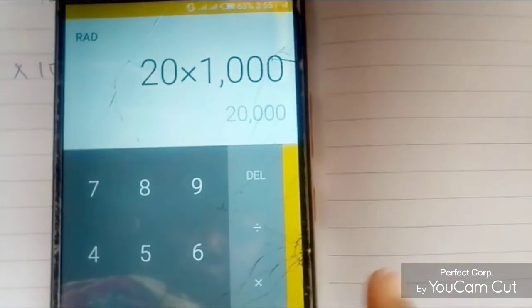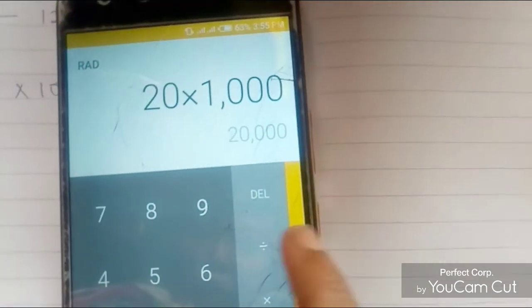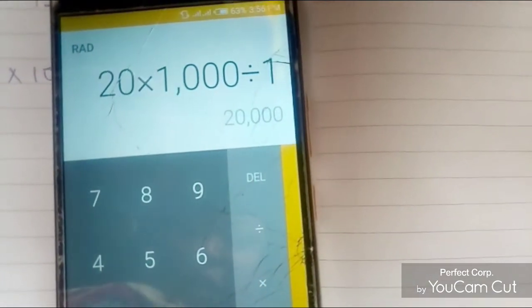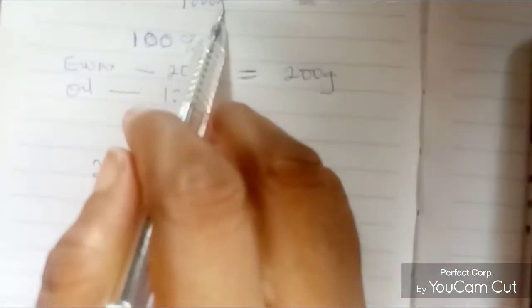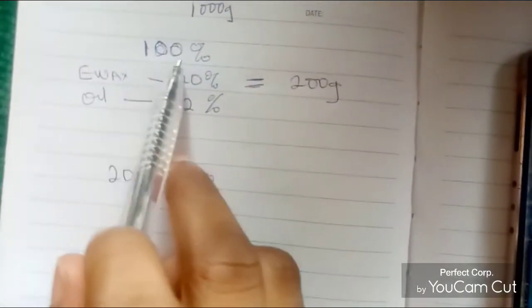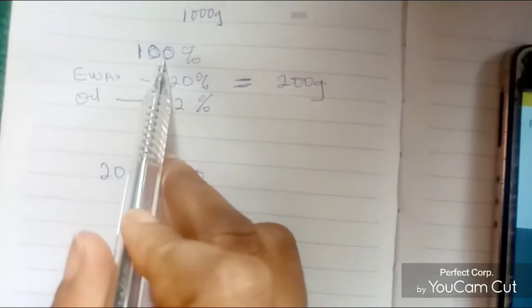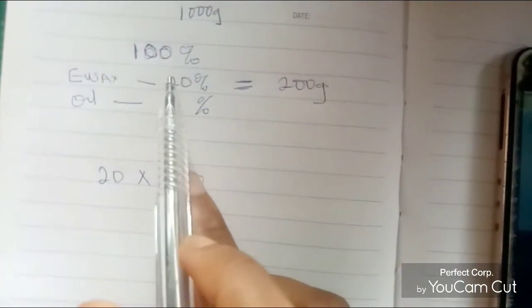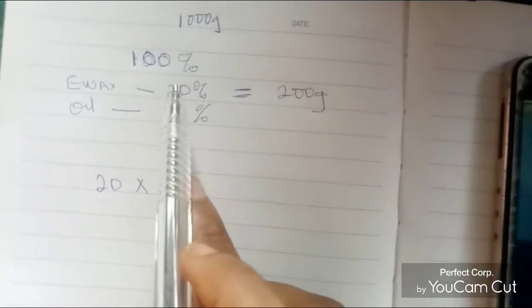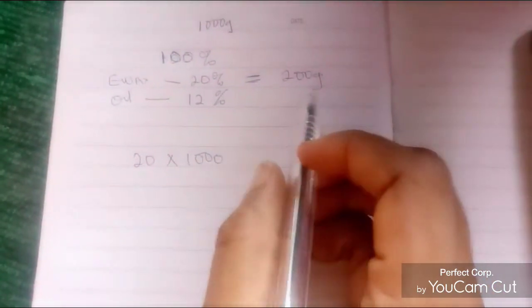20 times 1000, so we have 20,000. And then you're going to divide it by the percentage which is 100. So you have 200 grams. So 20 percent will be equal to 200 grams when you're making a thousand grams.